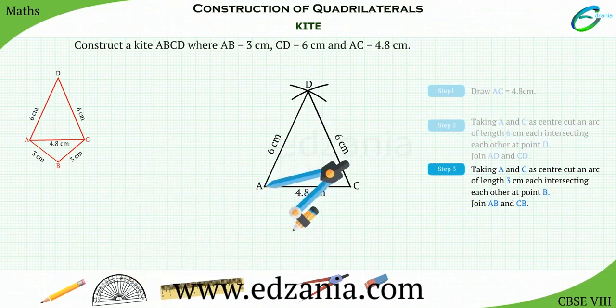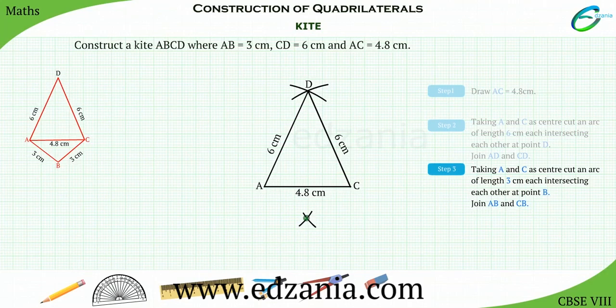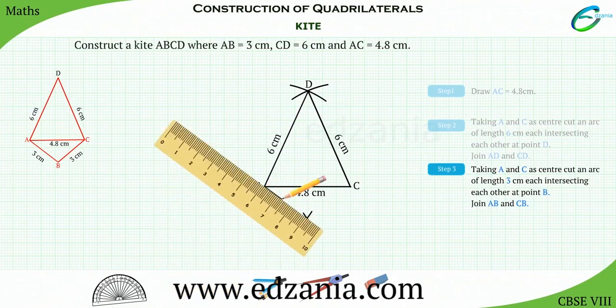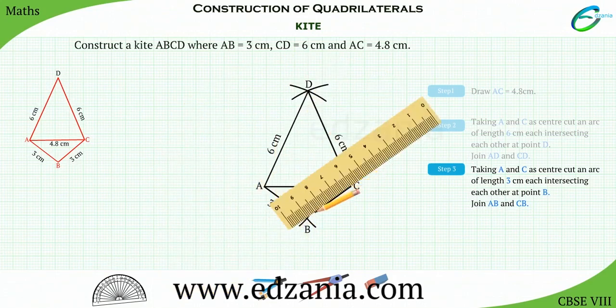Repeat the procedure by placing the compass pointer at point C. Let the two arcs intersect at a point. Name the point as point B. Now, join AB and CB.